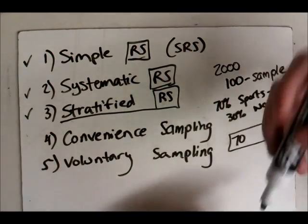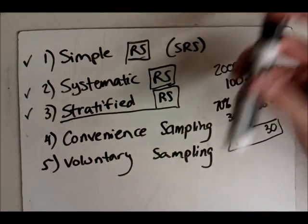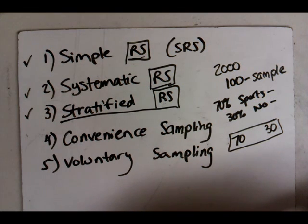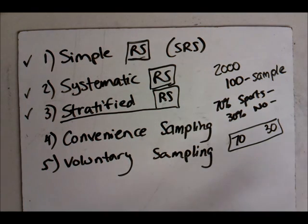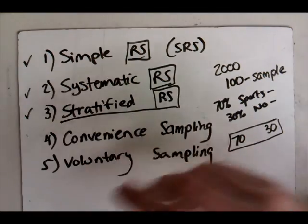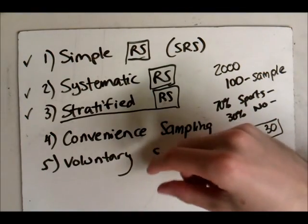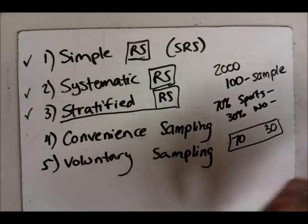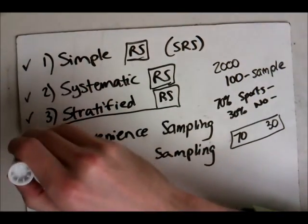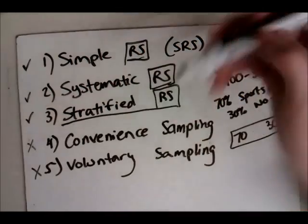Voluntary sampling is where you put your survey out there so that people can volunteer to take it or not. That one's bad because not only is it not random, but also you're only going to get probably two opinions: those who care a lot and those who care a lot in the opposite direction. Those who feel very strongly, very positive strong feelings about the subject at hand, or those who have very strong negative feelings about the subject at hand. These two here, you do not want to use them. These three are good.